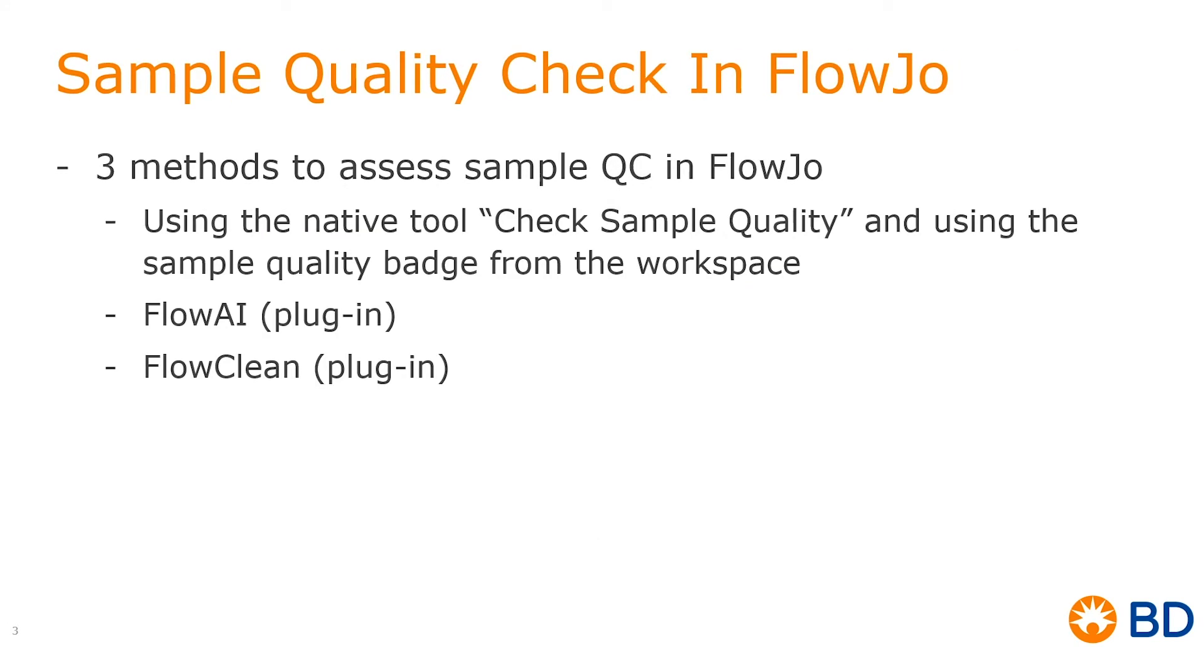In FlowJo, we have three methods to do just that. The first one would be to use the native tool, check sample quality, and then use the sample quality badge from the workspace.